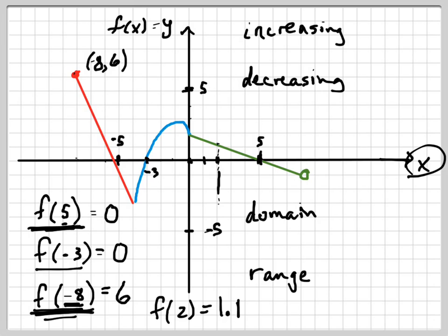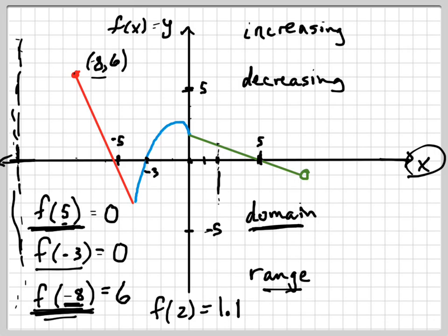That function value approach is also how you should think about domain and range. The domain is asking what x values are defined by this piecewise graph — the red line connected to the blue line connected to the green line. The question is what x values have y values associated with them. The way to do this is to start on the far left side and scan. This dotted line represents a scanner — I'm scanning up and down. Is this line going to touch the graph anywhere? At negative 11 or 12? Nope. When is it going to start touching? Right here at negative 8 is where it starts touching.